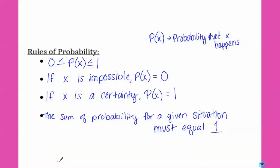Our rules of probability: P(x) stands for the probability that x happens. The probability of something happening has to be between 0 and 1. If x is impossible, the probability is 0. If x is a certainty, meaning it's guaranteed to happen, the probability is 1. And the sum of the probabilities for a given situation must always equal 1 — they always add up to 1.